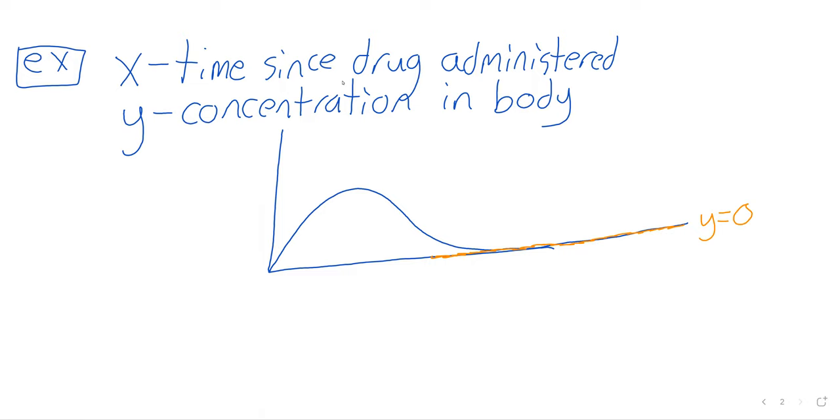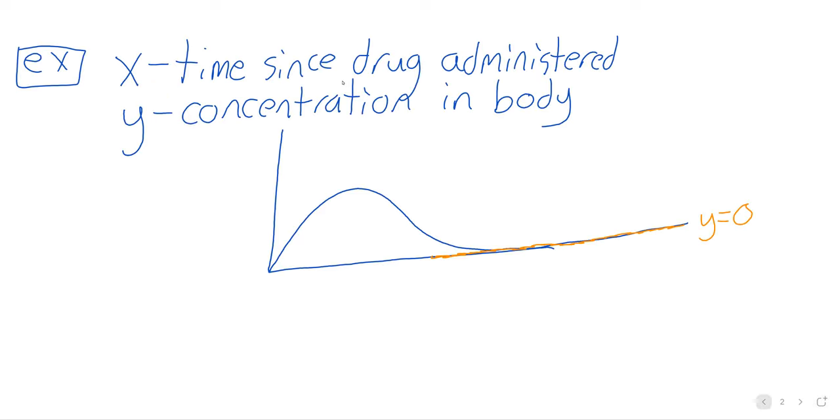And the way this happens graphically, well, just think what we see here. We have y equals zero, and then we have our curve. And as x increases, y is getting closer and closer to zero, and the curve is getting closer and closer to this horizontal line.